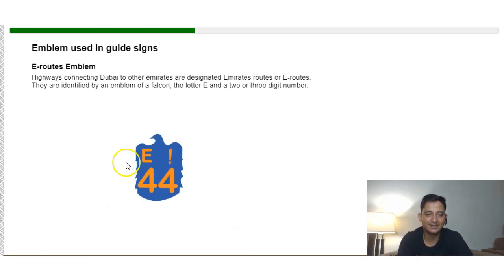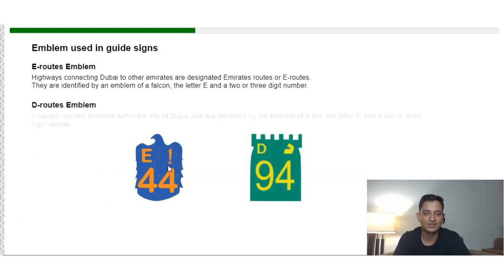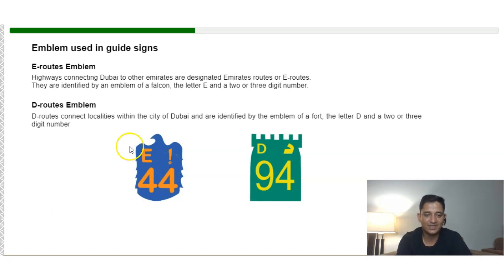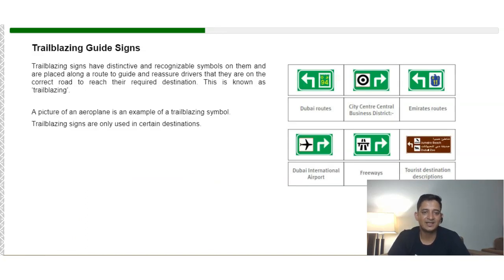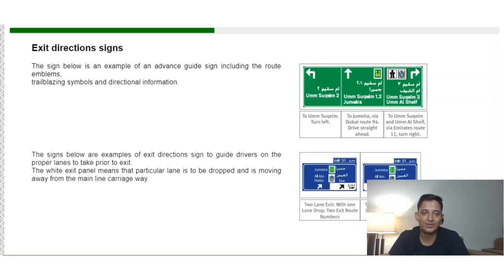A blue eagle emblem with a route number is used on highways, for example Emirates Route E44. Dubai routes are identified by the letter D and a two- or three-digit number. Green background emblems are used inside Dubai, and blue is for national highways. Trailblazing guide signs have symbols on them and are placed along a route to guide and reassure drivers that they are on the correct road. Advanced guide signs indicate the route emblem, trailblazing symbol, and direction information.